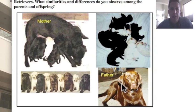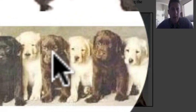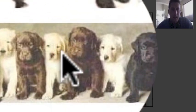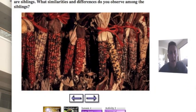The father here is a chocolate color, the mother is black, and the offspring — the puppies — include a black, a chocolate, and also a yellow colored Labrador retriever. The color is dictated once again by DNA. This next slide shows Indian summer corn, which is actually a really sweet corn.